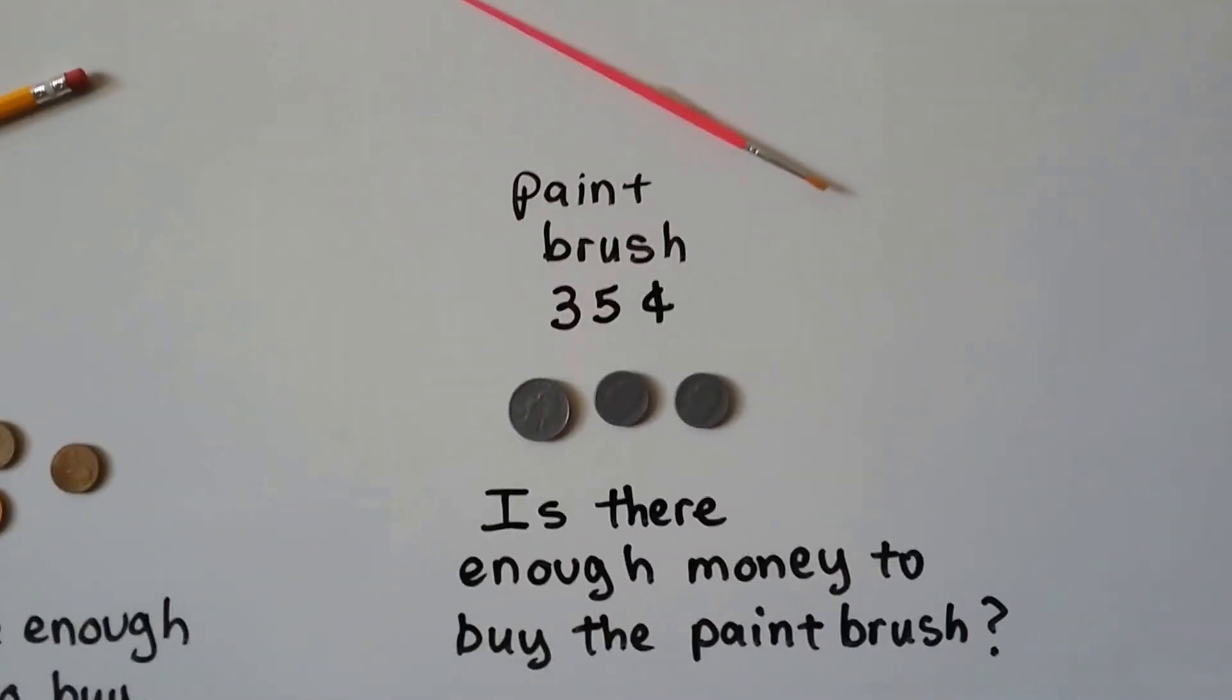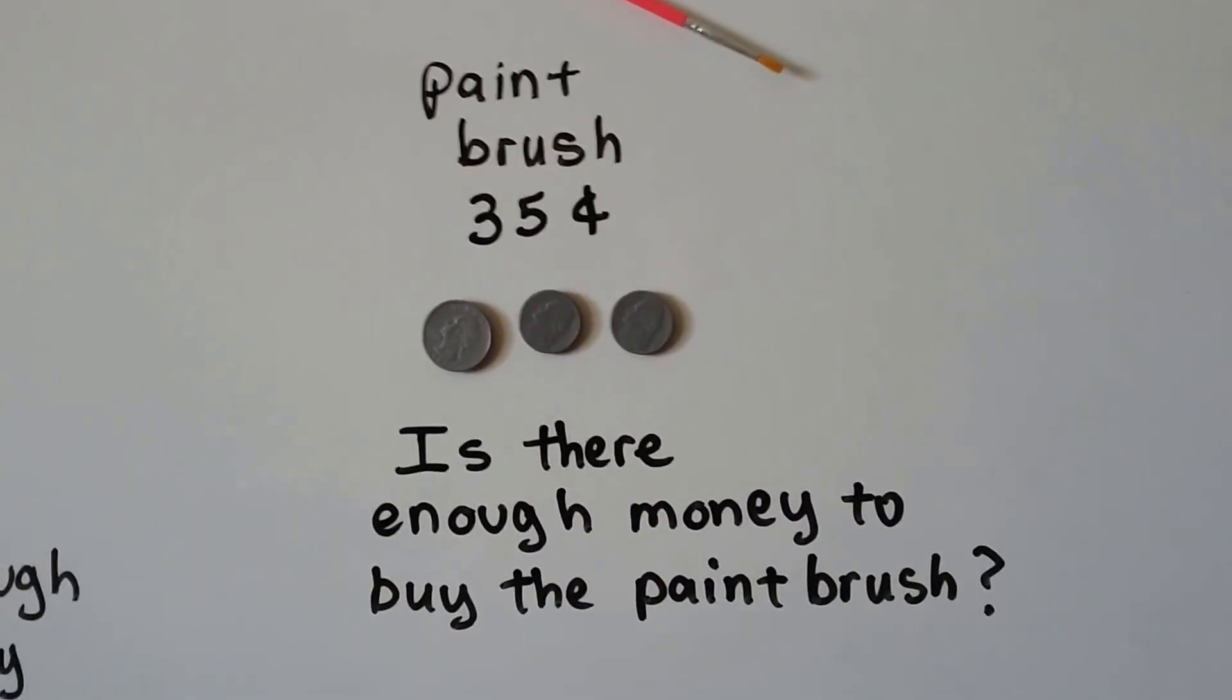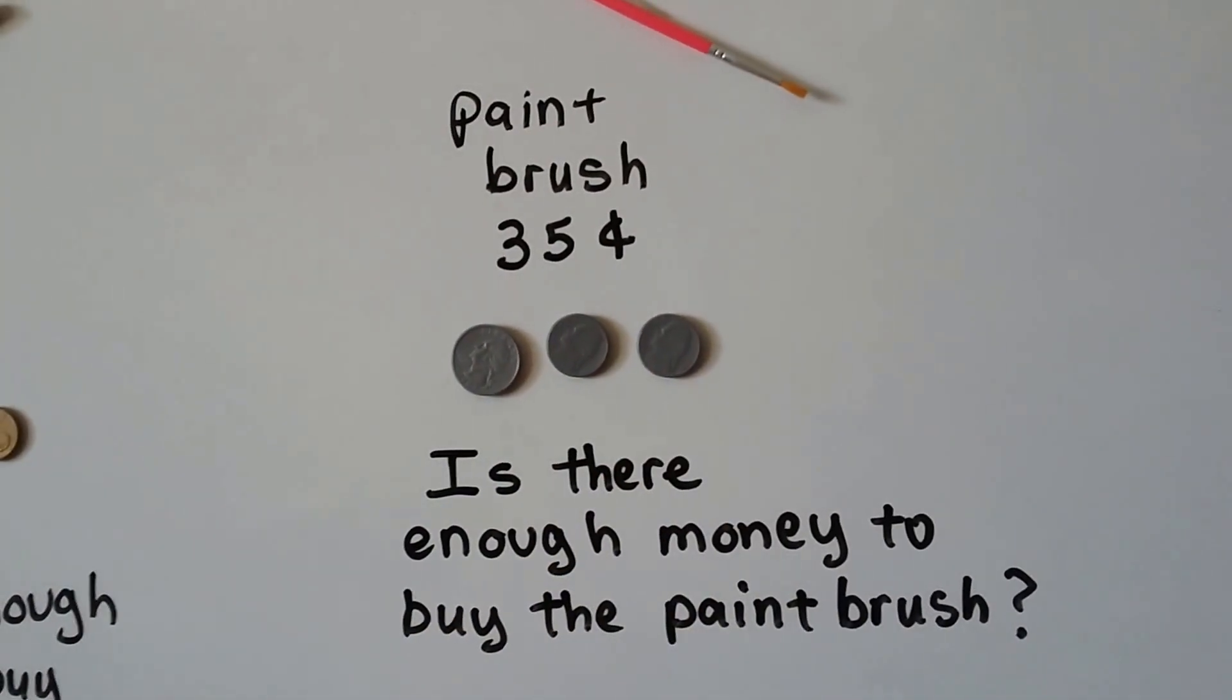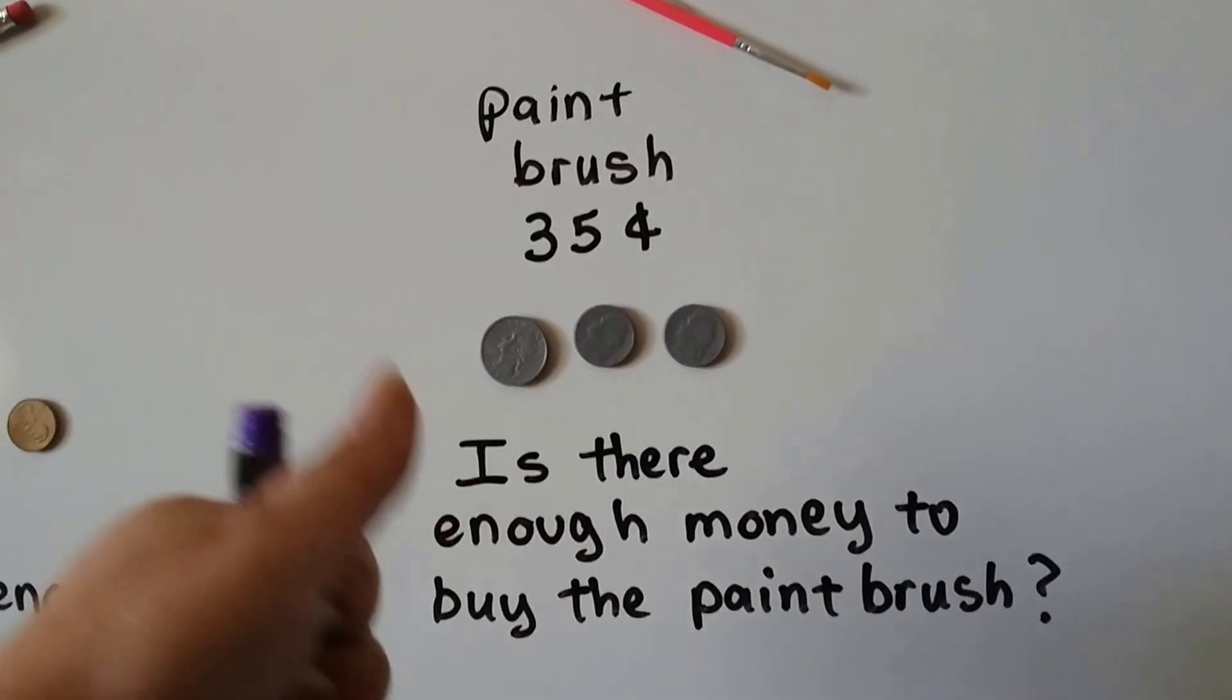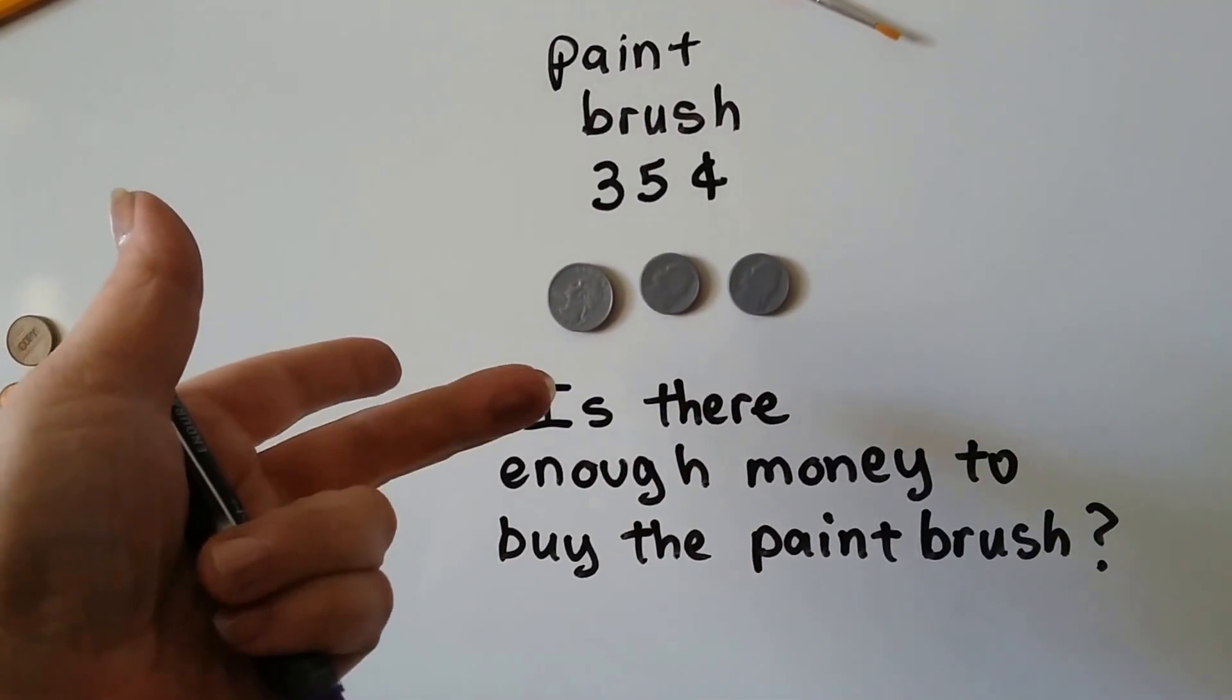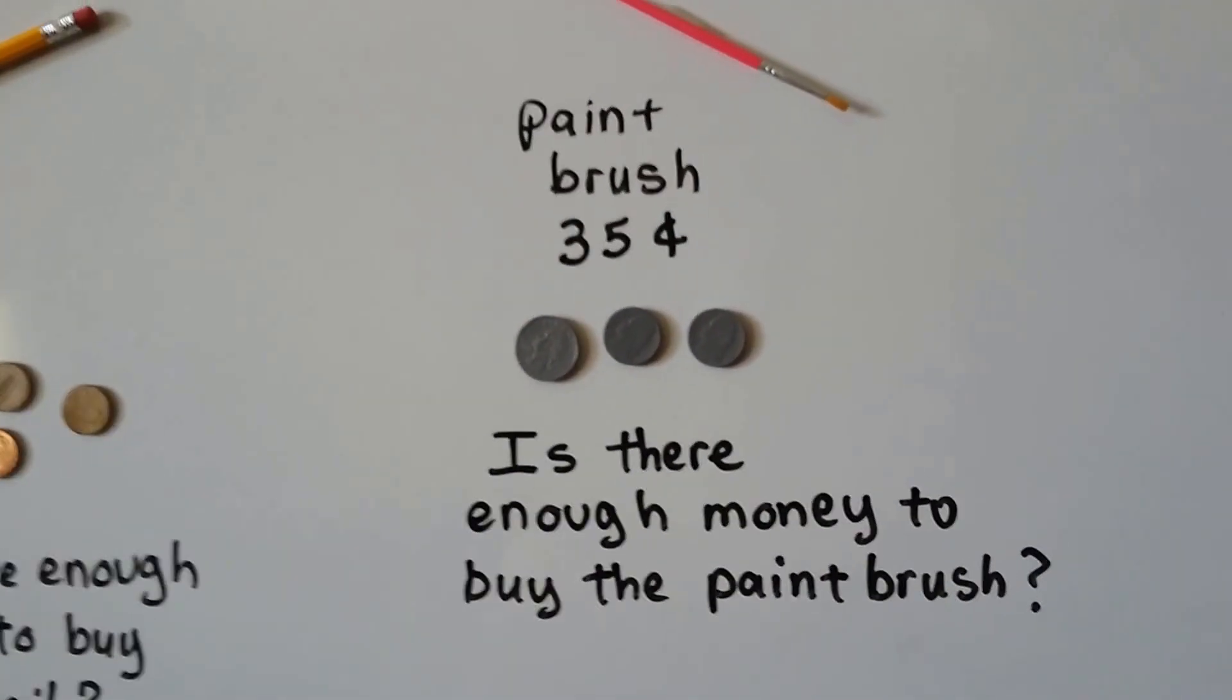How about this? Here's a paint brush for 35 cents. Is there enough money to buy the paint brush? We have a quarter. That's 25 cents. And we have a nickel that's 5 cents and a nickel that's 5 cents. We have 25 and 5 is 26, 27, 28, 29, 30. And 5 more is 31, 32, 33, 34, 35. So yes, we have enough to buy the paint brush.